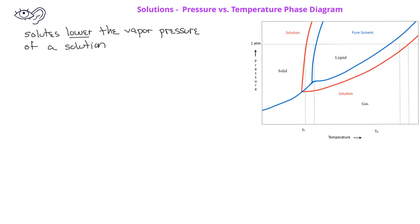When we look at the liquid-gas transition at any given temperature, we see that the blue solvent line is at a higher pressure than the red solution line. This shows that the solution vapor pressure is lower than the solvent vapor pressure for any given temperature. If we look at this phase diagram in a little more detail, we can also compare the boiling points and the melting or freezing points of the solution and the solvent.